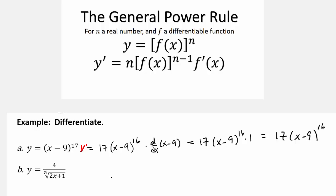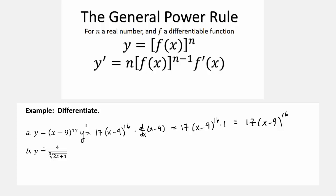All right, now part B, you have a little bit of rewriting to do before you even start taking the derivative. How would we rewrite part B? 4 times 2x plus 1 to the negative 1 fifth. Okay, go ahead and take that derivative.